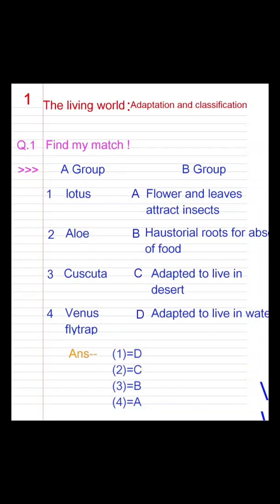Students, today we learn General Science Standard 7, Chapter 1, Question and Answer. The chapter name is 'The Living World: Adaptation and Classification.' Question 1.